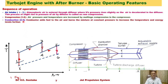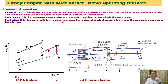The combustion process (2 to 3) is represented by a curve from 2 to 3 on the T-S diagram and takes place in the combustion chamber. During this process, the combustor adds fuel to the high-pressure, high-temperature air and burns the mixture at constant pressure, further increasing the temperature and energy levels.